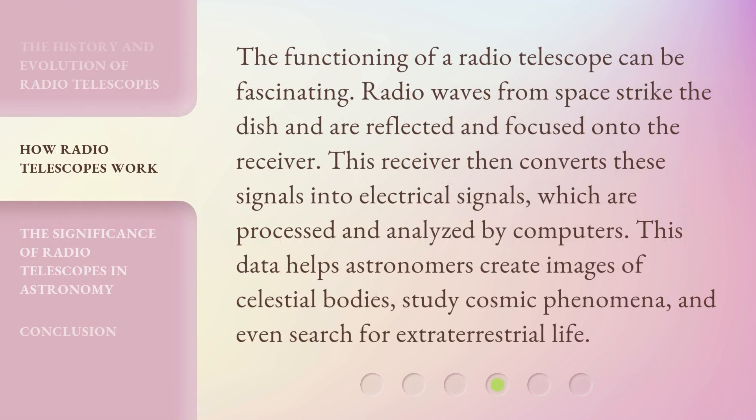The functioning of a radio telescope can be fascinating. Radio waves from space strike the dish and are reflected and focused onto the receiver. This receiver then converts these signals into electrical signals, which are processed and analyzed by computers. This data helps astronomers create images of celestial bodies, study cosmic phenomena, and even search for extraterrestrial life.